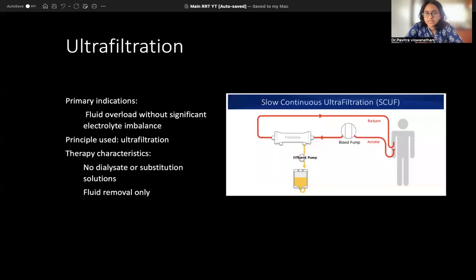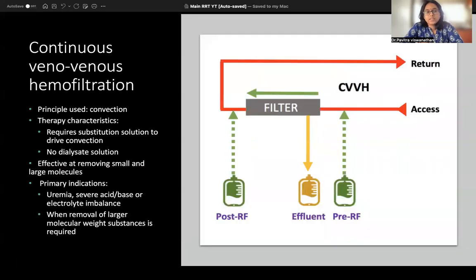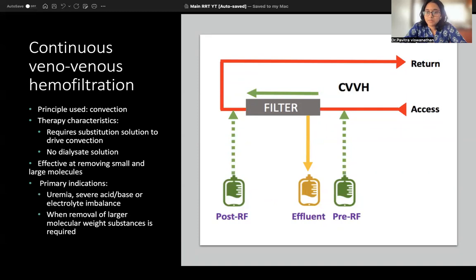In Continuous Veno-Venous Hemofiltration (CVVH), convection is the principle. To use convection you need a pressure difference, and for that you add replacement fluid to create the pressure difference. Blood comes out, replacement fluid is added, creates a pressure difference, whatever needs to be removed goes into the effluent bag, and the rest returns to the patient.